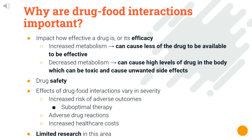Now that we've discussed what drug-food interactions are, let's go over why they're important. These interactions can impact how effective a drug is, or its efficacy, by increasing or decreasing the metabolism of the drug. Increased metabolism can increase clearance and result in lower drug concentrations in the body. Decreased metabolism can cause high drug levels to accumulate, leading to adverse effects and toxicity. This is a major drug safety concern, as interactions can increase adverse outcomes, incidence of suboptimal therapy, adverse drug reactions, and overall healthcare costs. There is also very limited research in this area.